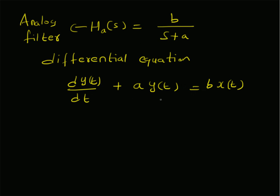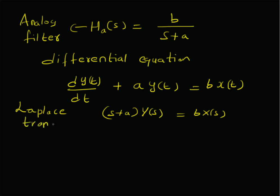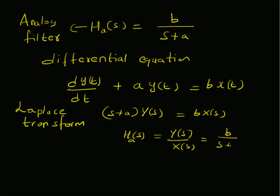By applying the Laplace transform to this differential equation, we can derive the transfer function in the s-domain. On the left side we have (s + a)·Y(s), and on the right side we have b·X(s). Taking the ratio Y(s)/X(s), we get H_a(s) = b / (s + a), which is the transfer function of the analog filter.